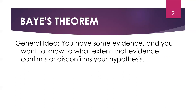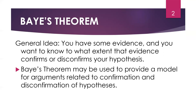So this is the situation you find yourself in: you already have a hypothesis, you've gathered evidence, and now to what degree is your hypothesis confirmed? We've talked about how confirmation comes in degrees and increments. Bayes' theorem is a way to measure that — it can be used to provide a model for reasoning related to confirmation or disconfirmation of hypotheses, putting some numerical criteria on the degree to which something is confirmed or even disconfirmed.